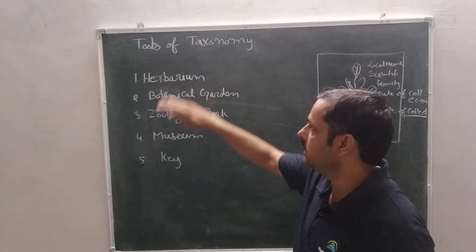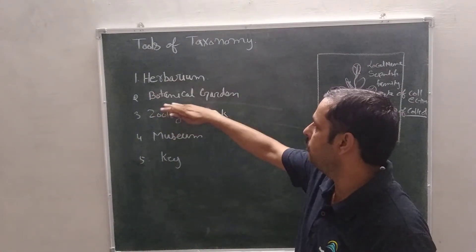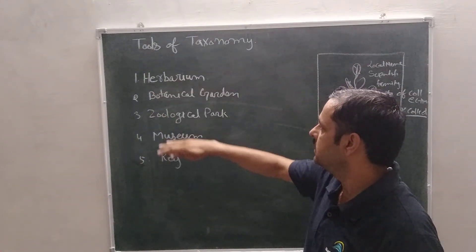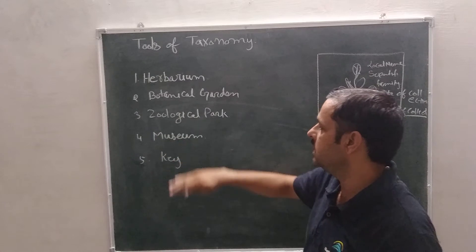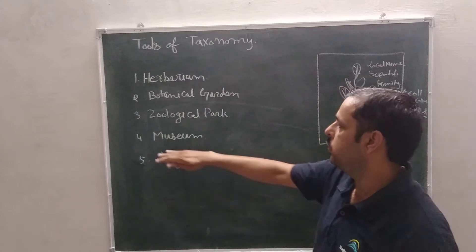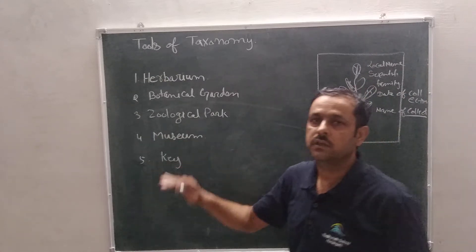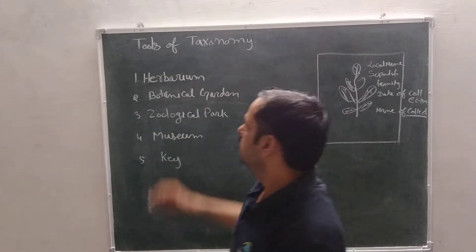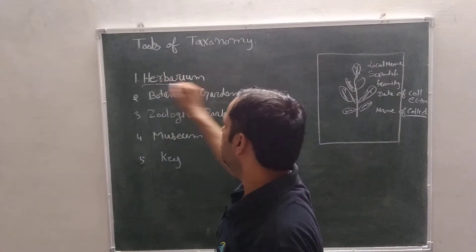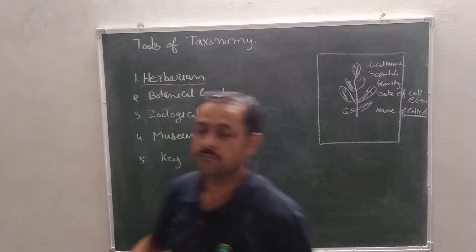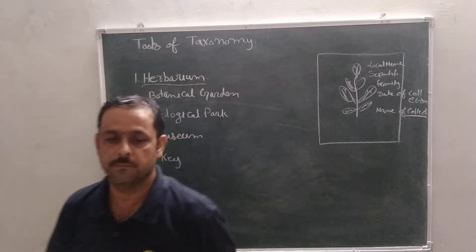First, herbarium. Second, botanical garden. Third, zoological park. Four, museum. And fifth, key. We discuss first of all herbarium. What is herbarium?